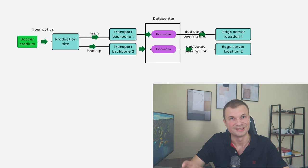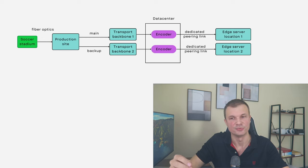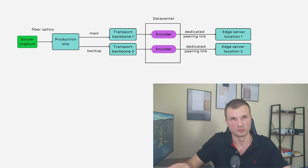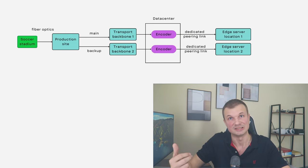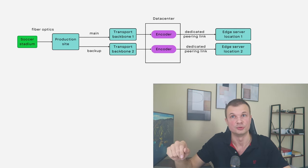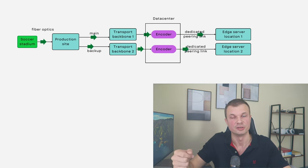Now let's drill down into specific components. The video originates at the shooting location — a soccer stadium or your laptop. For big events like a stadium, fiber optics connect every camera to the on-site production site. From the production site, dedicated network links stream the video to the data center — in our case, AWS. Once AWS receives the video, the encoding process begins in core data centers, which are compute-heavy and large, capable of processing and encoding large volumes of video.